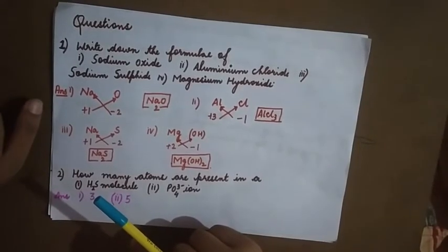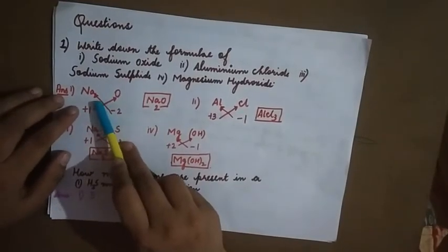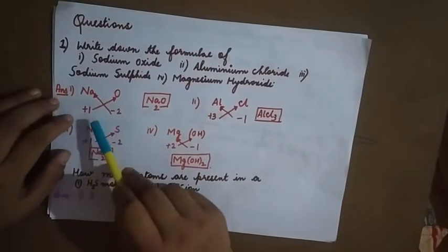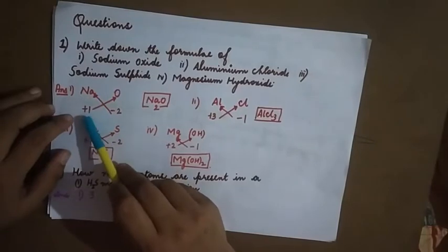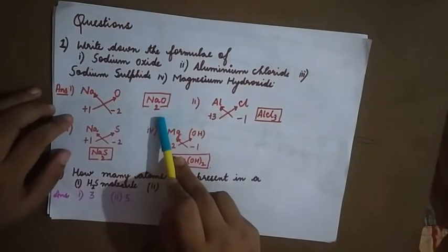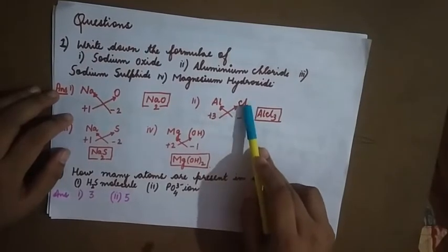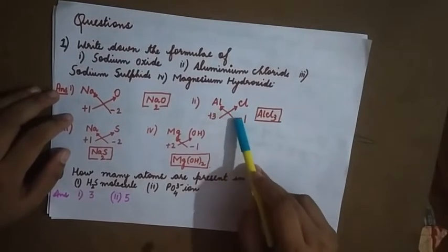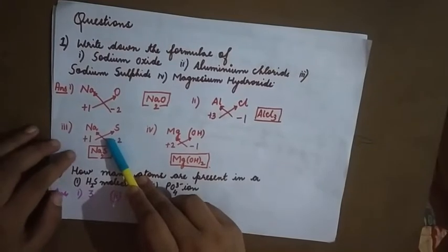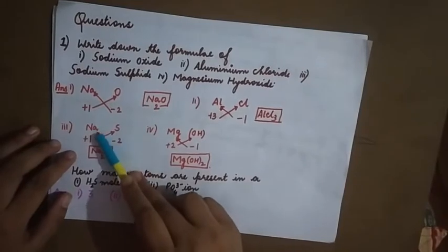Once you know the valency and symbol, it becomes very easy to construct chemical formulae. For the first one, sodium oxide: sodium is Na, oxygen is O. The valency of sodium is +1 and oxygen is -2. When you criss-cross the valency you get Na₂O. Second, aluminium chloride: aluminium is +3 and chlorine is -1, so criss-crossing gives AlCl₃.